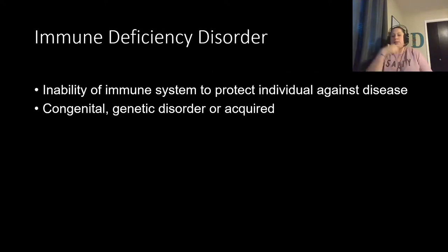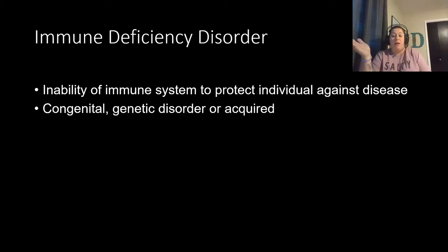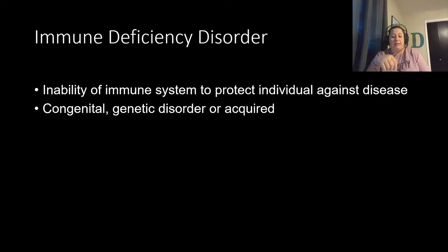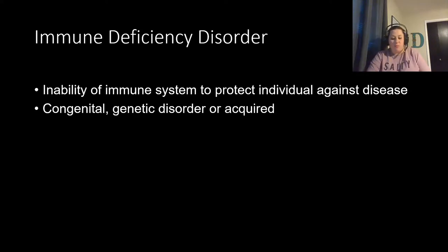Immunodeficiency disorders represent the inability of the immune system to protect against pretty much anything because it's so degraded. This can be congenital — a genetic disorder like SCID — or acquired, which is more common, as with AIDS. Acquired immunodeficiency may result from bone marrow suppression due to chemotherapy or radiation, from anti-rejection medications that intentionally weaken the immune system, or from the HIV virus causing AIDS.